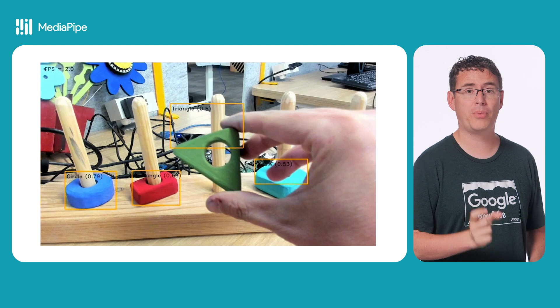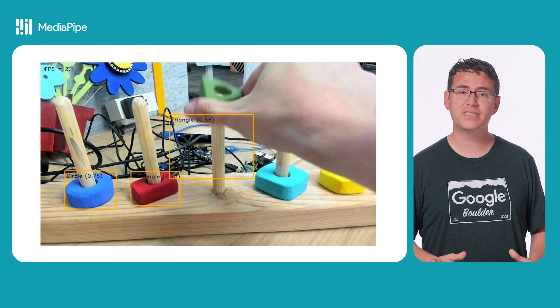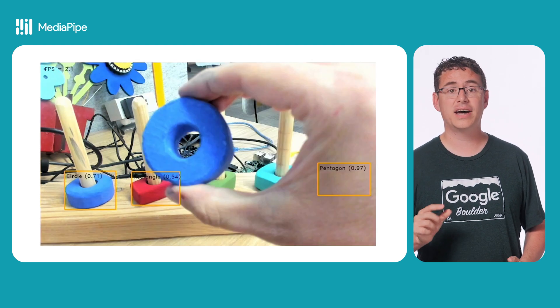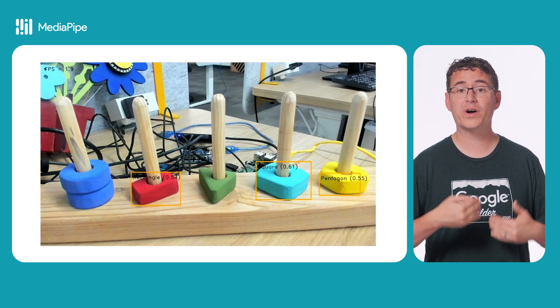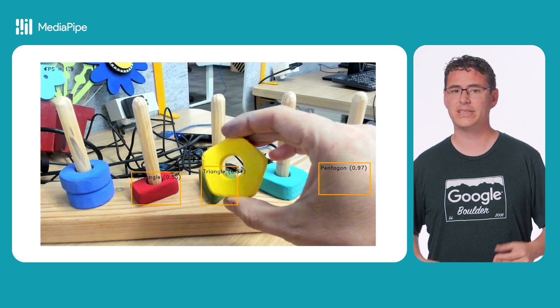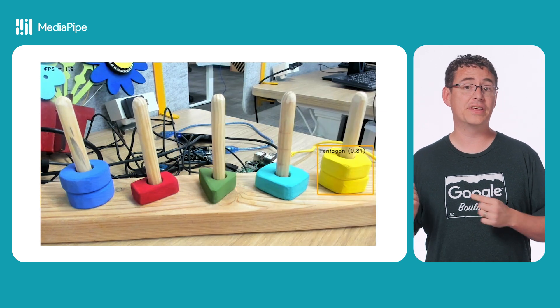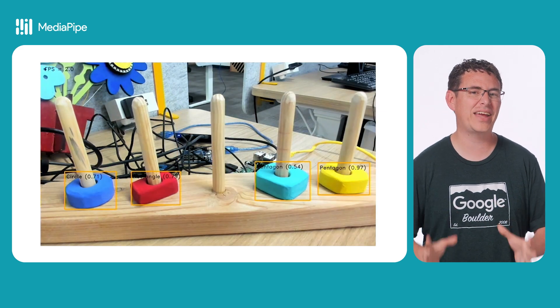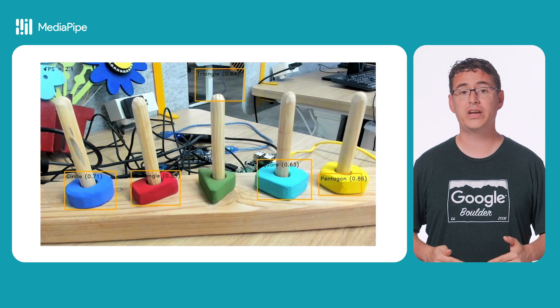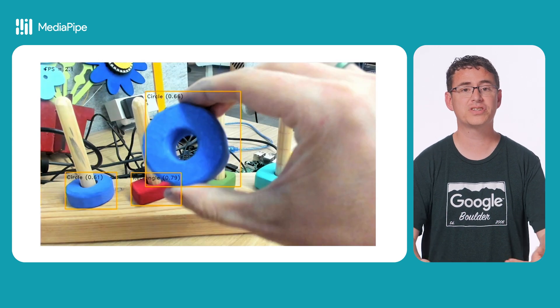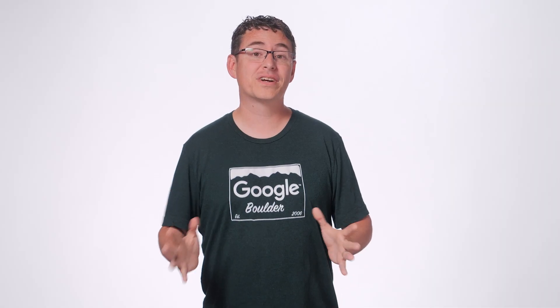When I run the sample with the custom model, you can see how each individual block has a bounding box drawn around it, a label for what kind of block the model thinks it sees, and a confidence score. In the next video, I'm going to cover exactly how I made the model that you see here, so you can start creating your own custom object detection prototyping models for your projects. We're excited to see all the cool things you make with MediaPipe on the Raspberry Pi. Let us know in the comments what you've made or what you want to make, and I'll see you in the next video. Thanks.